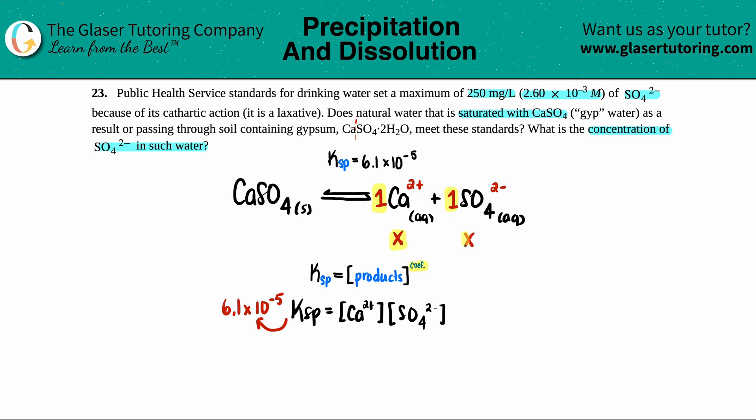And these are now your new variables. So we're going to plug in the x value for the calcium and the x value for the sulfate. So now we have 6.1 times 10 to the negative fifth equals basically x times x. But x times x is just x squared.